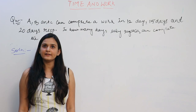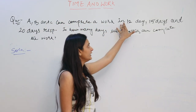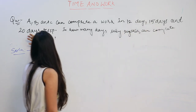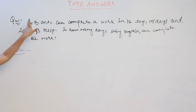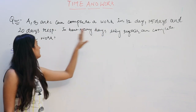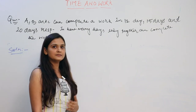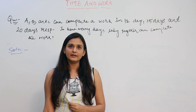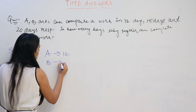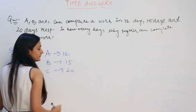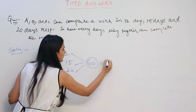Now the next question: A, B and C can complete a work in 12 days, 15 days and 20 days respectively. In how many days can they together complete the work? Apply the LCM method. A can do the work in 12 days, B in 15 days, C in 20 days. Take the LCM of these three numbers, which comes out to be 60 — this is the total unit of work.